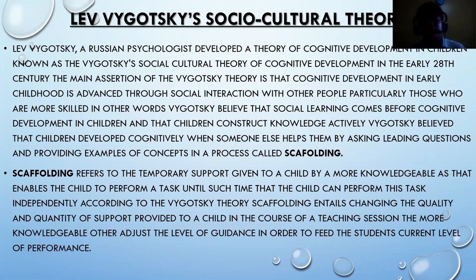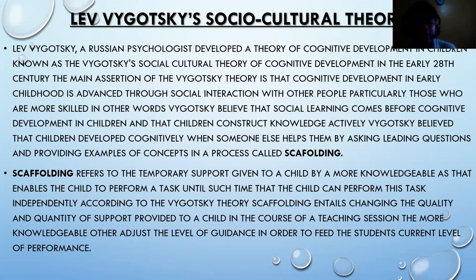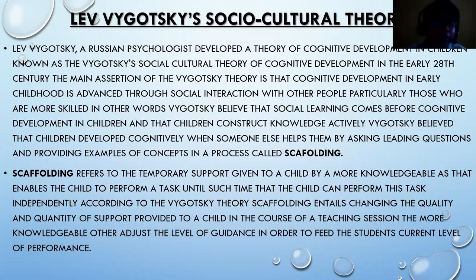We also have Lev Vygotsky's sociocultural theory. Vygotsky was a famous Russian psychologist who developed the theory of cognitive development in children, known as the sociocultural theory of cognitive development, in the early 20th century. His main assertion is that cognitive development in early childhood is advanced through social interaction with other people, particularly those who are more skilled. Vygotsky believed that social learning comes before cognitive development in children, and that children construct knowledge actively.